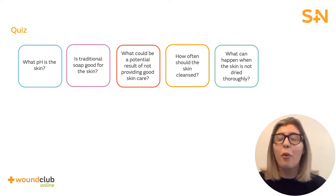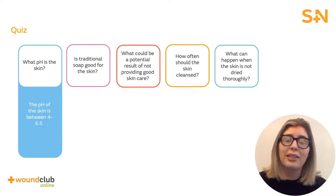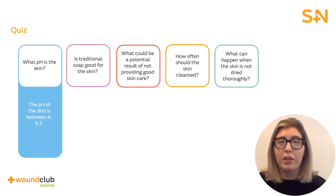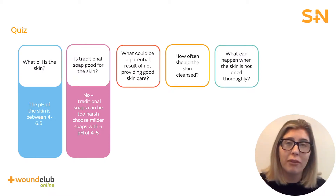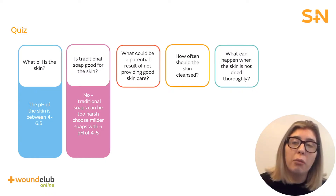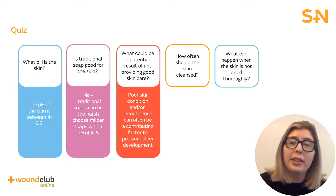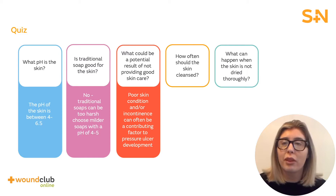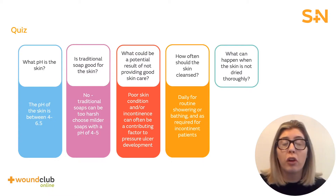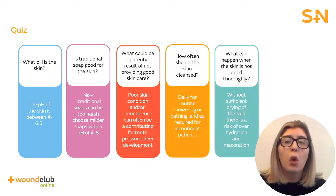The pH of the skin is between 4 and 6.5. Traditional soap is not good for the skin — traditional soaps can be too harsh; try a milder cleanser or a soap with a pH between 4 and 5. Poor skin condition or incontinence can often be a contributing factor to pressure ulcer development. The skin should be cleansed daily for routine showering and bathing, and as required for incontinence patients. Without sufficient drying of the skin, there is a risk of over-hydration and maceration.